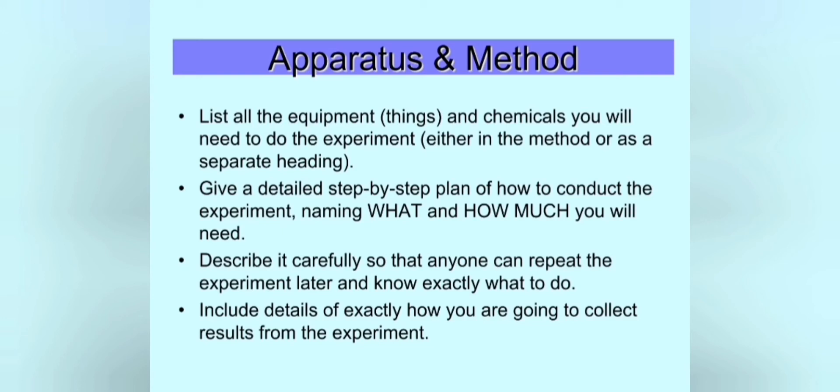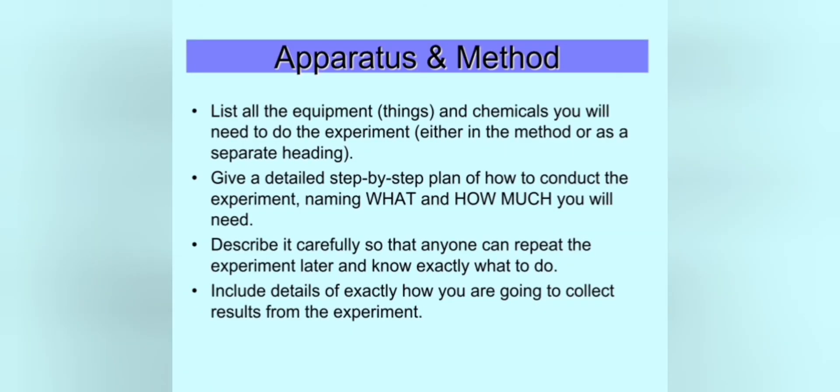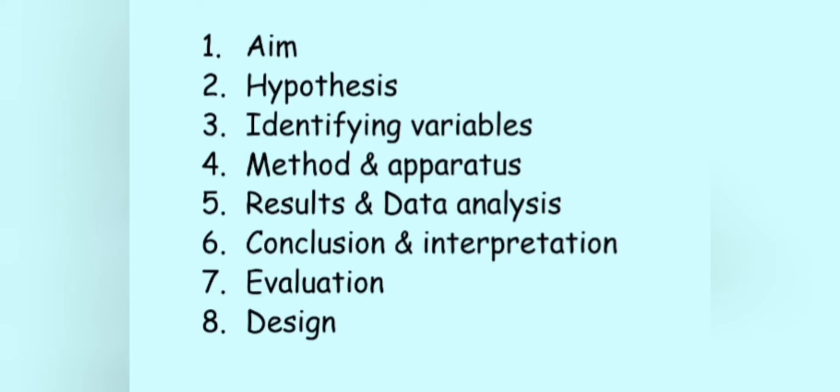You have to list that either as numbers or as bullets under a separate heading. You need to give a detailed step-by-step plan of how you're going to conduct your experiment. In other words, you tell me what you're going to use and how much of it you're going to use. You need to be careful so you describe it so well that someone else is able to repeat your experiment.